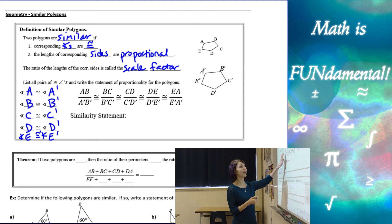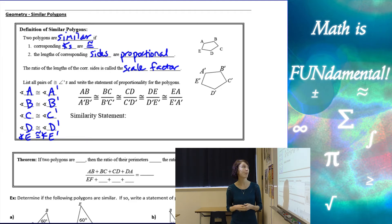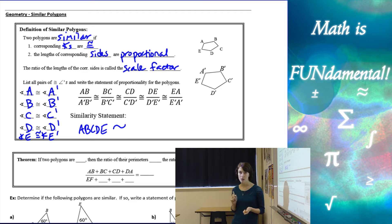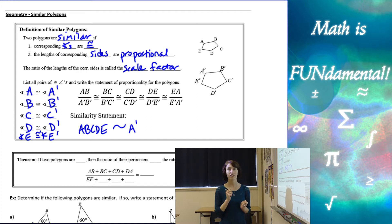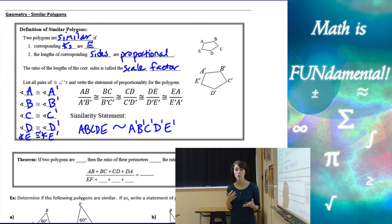If I take the length of AB and divide it by the length of A'B', it gives me the same ratio as any of the other sides divided by their corresponding sides. That's what it means for the sides to be proportional. The similarity statement looks like this: ABCDE is similar to A'B'C'D'E'. The order really matters here.